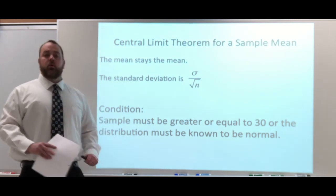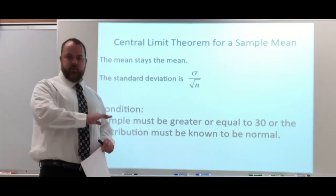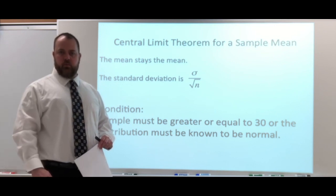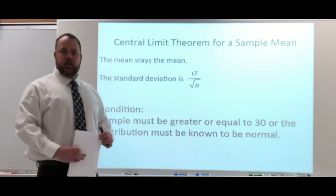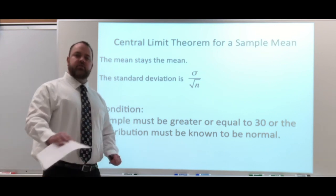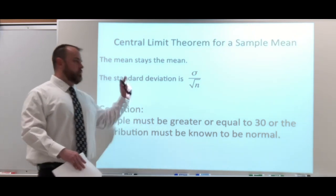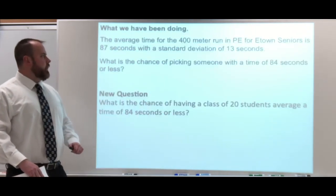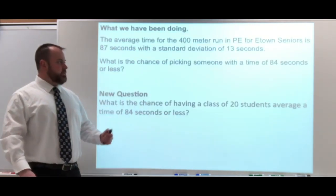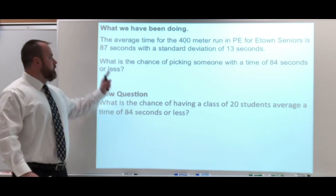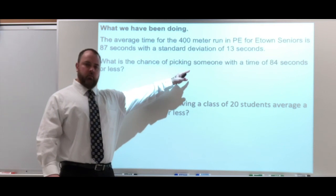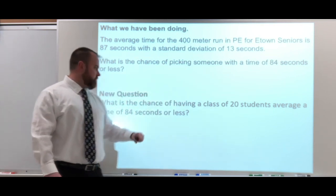From here on out, we're going to assume every distribution we look at for these examples is considered normal. That means our conditions are satisfied and we can move on using the central limit theorem. Here's the situation again: what is the chance of picking someone with a time of 84 seconds — that one person?